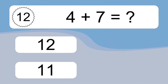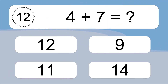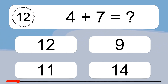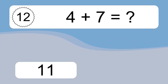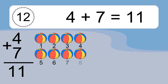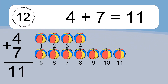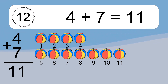4 plus 7 equals what? 4 plus 7 equals 11. Let's count it: 1, 2, 3, 4, 5, 6, 7, 8, 9, 10, 11.